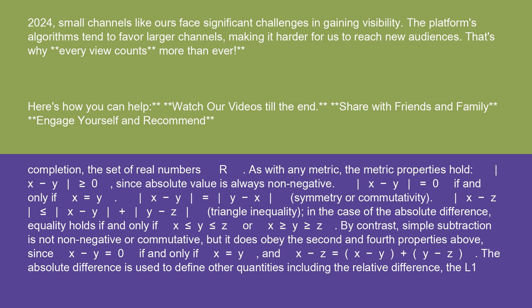By contrast, simple subtraction is not non-negative or commutative, but it does obey the second and fourth properties above, since x - y = 0 if and only if x = y and x - z = (x - y) + (y - z).